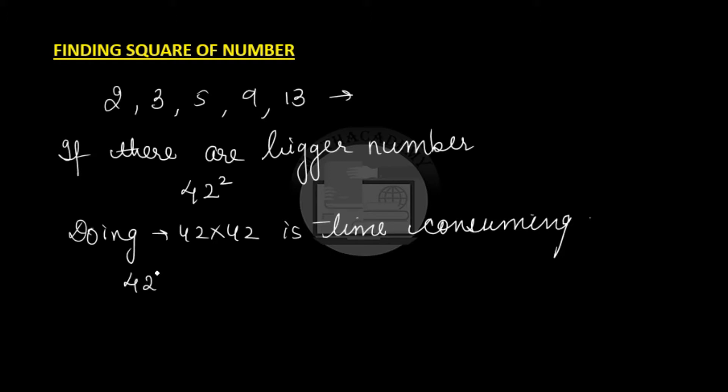We will write 42 square as 42 times 42 and this 42 can be written as 40 plus 2 times 40 plus 2, which is nothing but distributing 40 over this bracket.